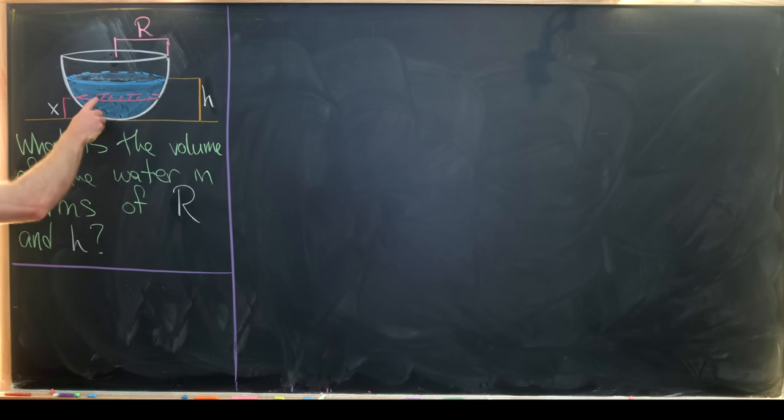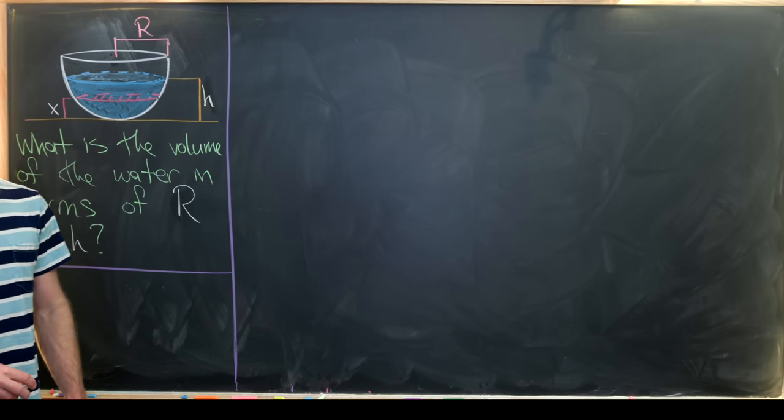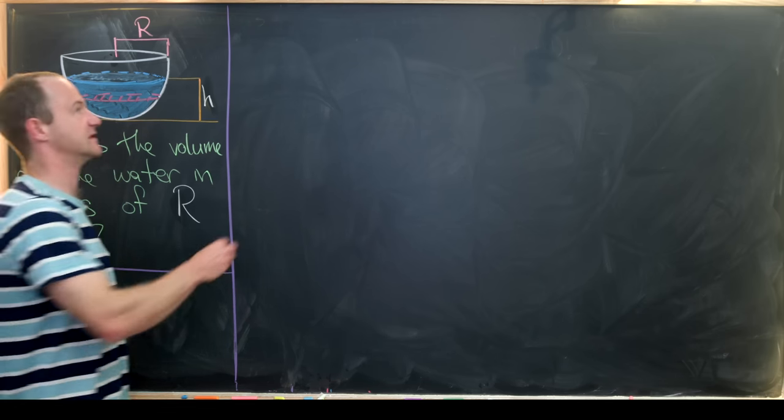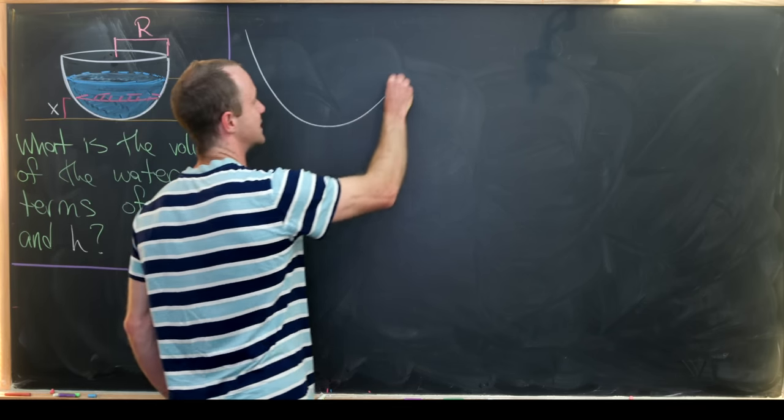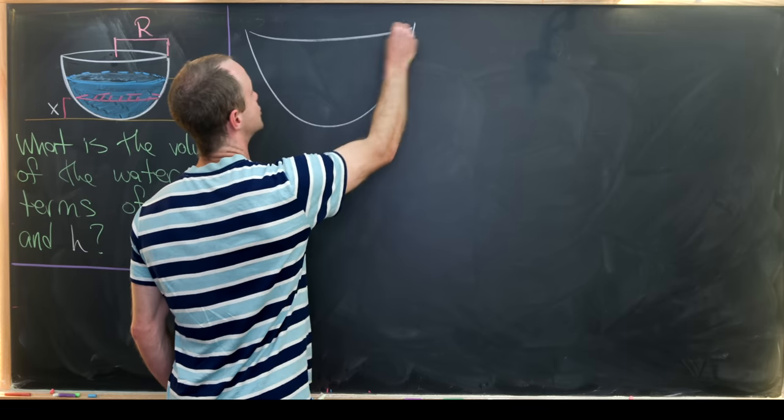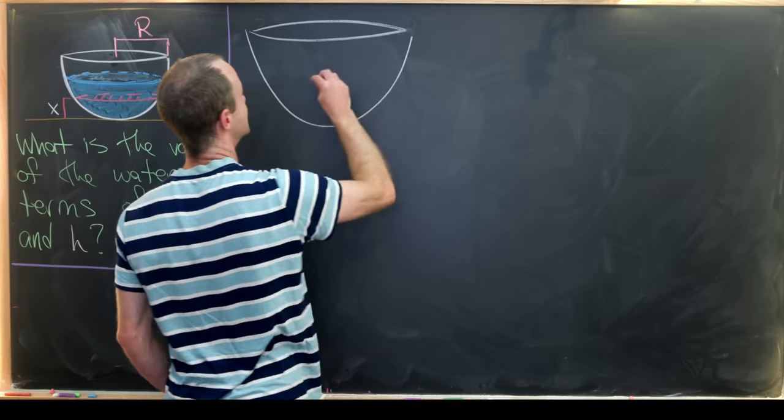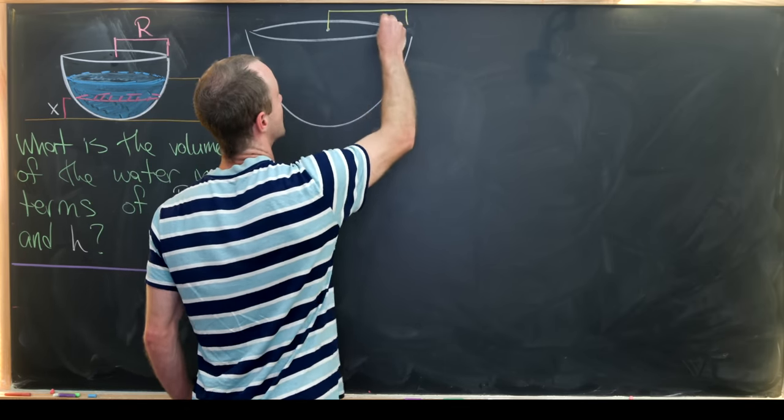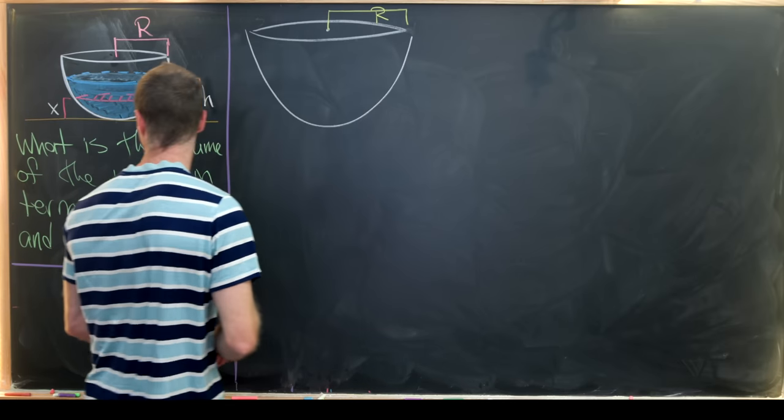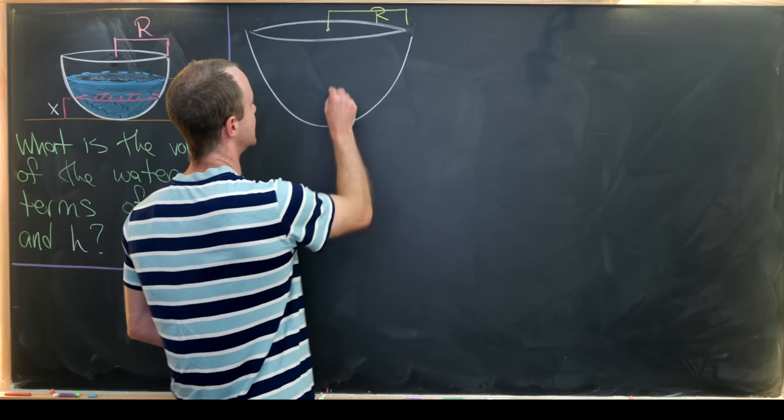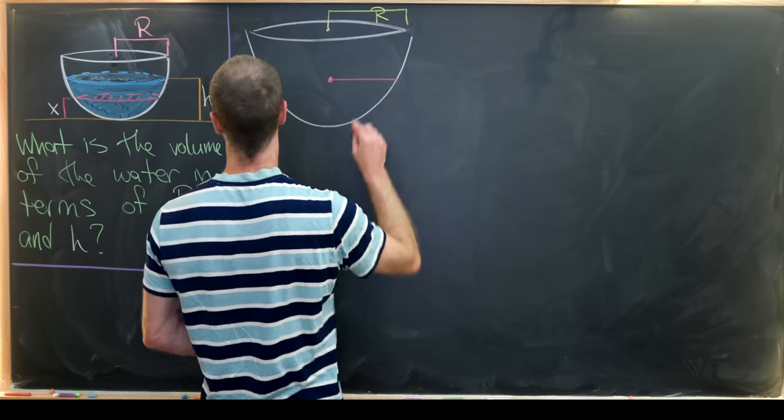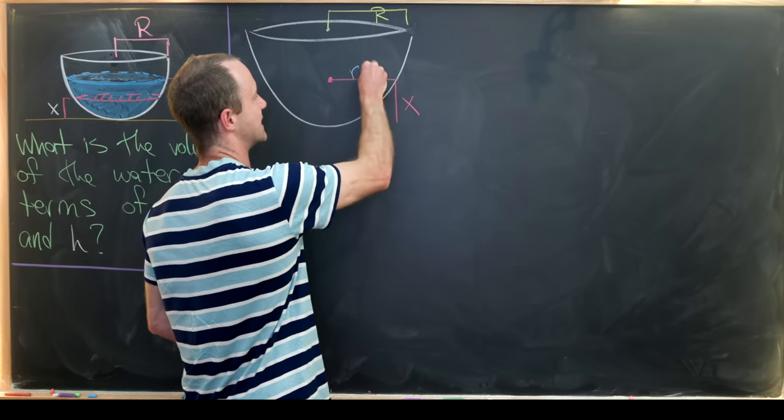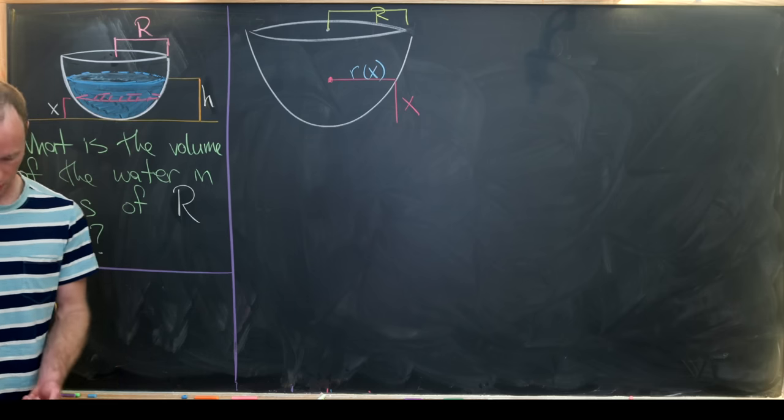But in order to find the area of this slice, we really need to know its radius. So let's calculate its radius in terms of x. We need to sketch up another little picture here just to get started. So let's say that's our hemisphere. Just as before, this hemisphere has radius capital R. But now we're going to put something in here with height x. And what we want to calculate is this radius here r of x.